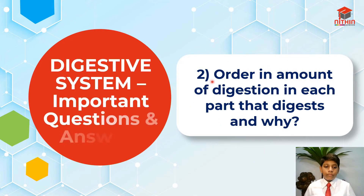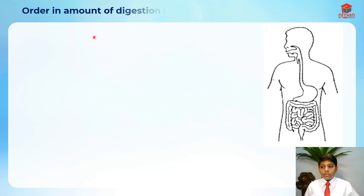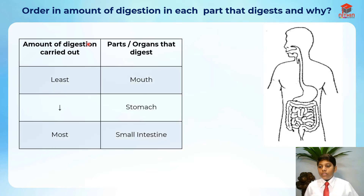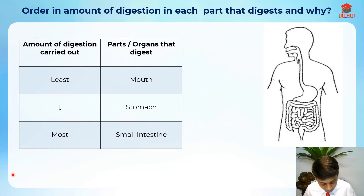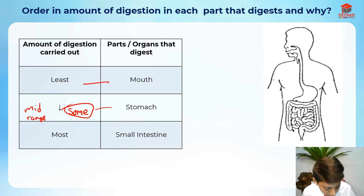Question two: the order of the amount of digestion in each part that digests, and why. In the mouth, there's the least digestion. In the stomach, there's some — basically the mid-range. And in the small intestine, there's the most digestion.